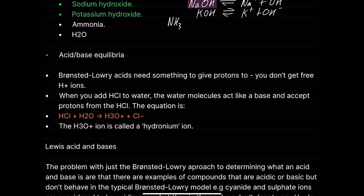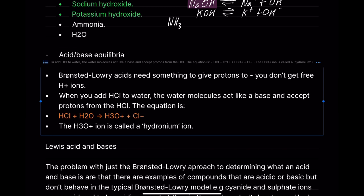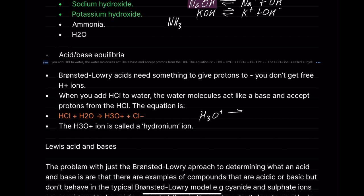Here, H2O is acting as a conjugate base, whereas HCl is acting as the acid. The H2O accepts a proton from HCl. The H3O+ ion is called a hydronium ion. The hydronium ion is technically the one acting as the acid — it dissociates into H+ plus H2O. In order for a Bronsted-Lowry acid to work, it needs something to donate the protons to.